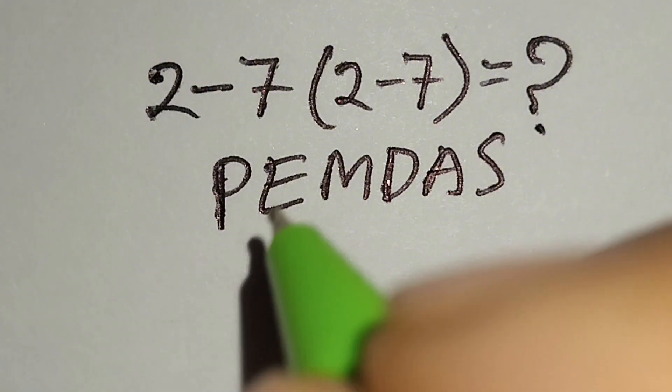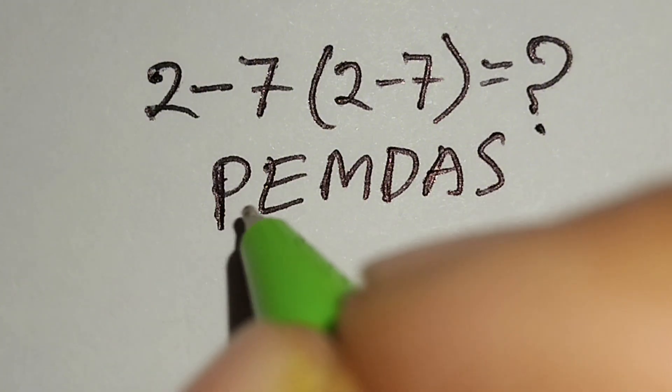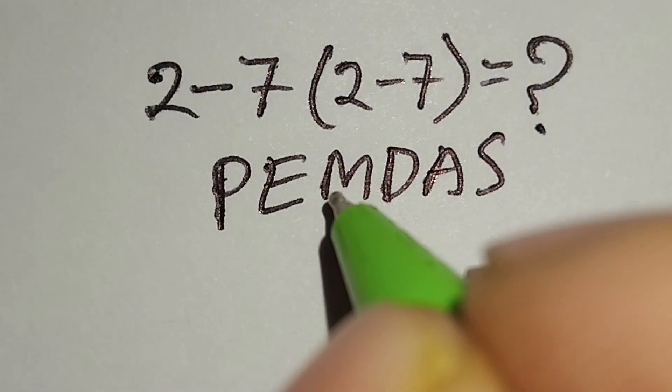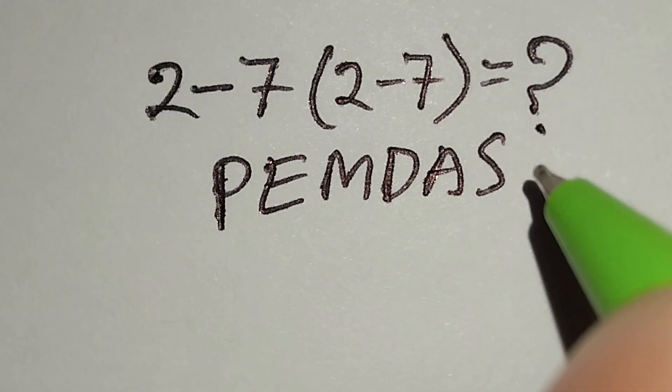According to PEMDAS rule, at first we have to work with parenthesis, then exponent, then multiplication or division, then addition or subtraction.